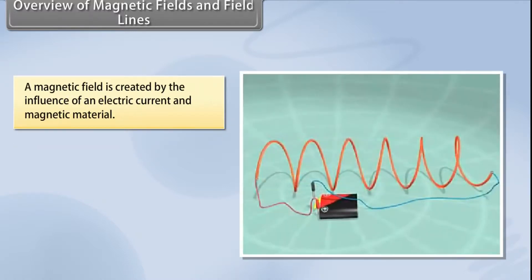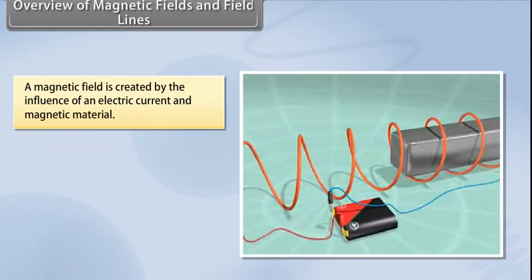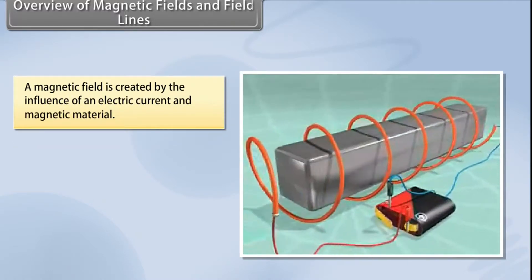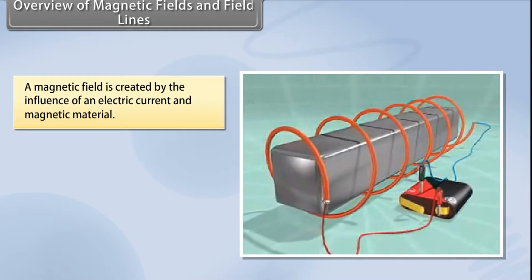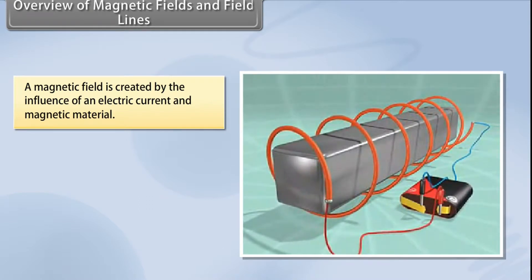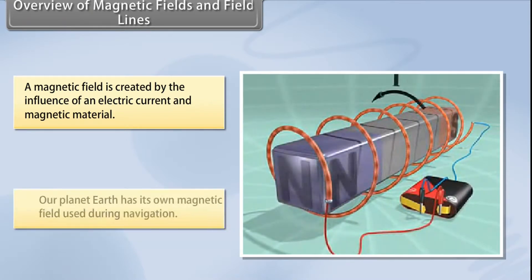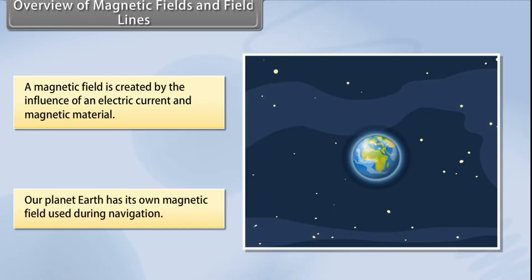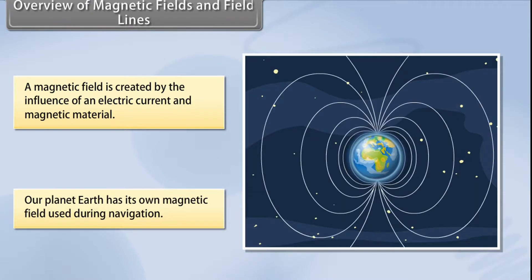A magnetic field is created by the magnetic influence of an electric current and magnetic material. Our planet Earth produces its own magnetic field, which is an important factor during navigation. Magnetic fields are also used in electric devices such as transformers.